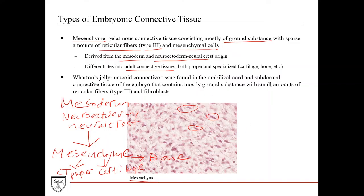The other type of embryonic connective tissue to be aware of is Wharton's jelly — a mucoid connective tissue found in the umbilical cord and the subdermal connective tissue of the embryo. It contains mostly ground substance with very small amounts of reticular fibers and fibroblasts, making it histologically not very exciting.